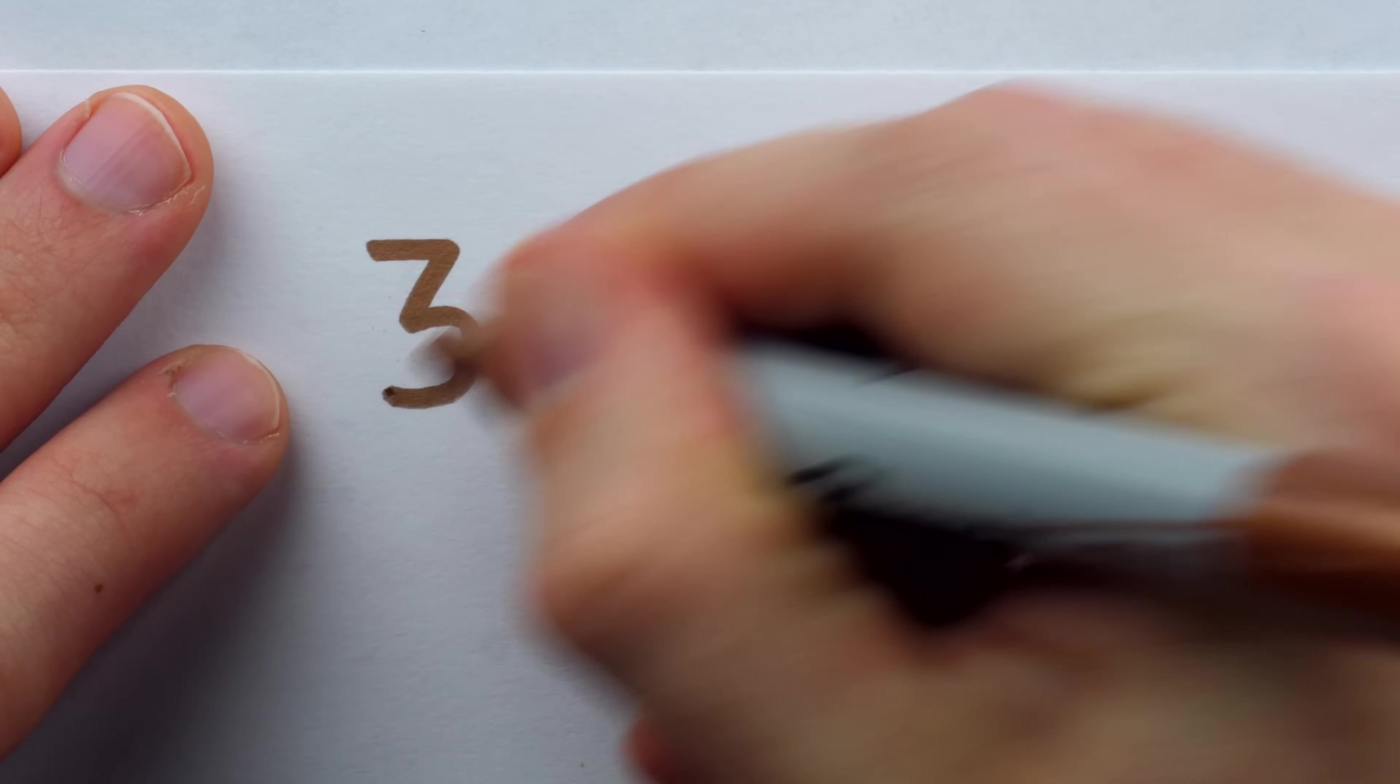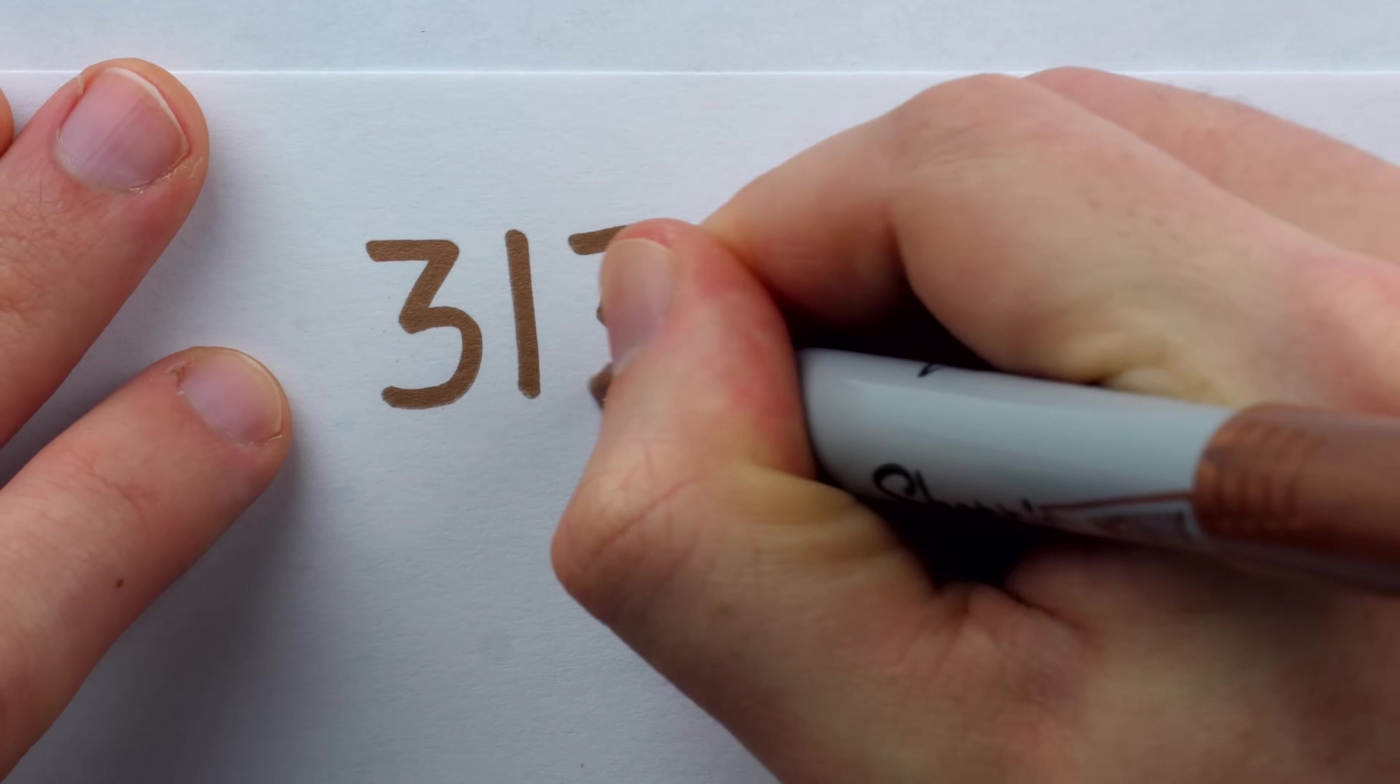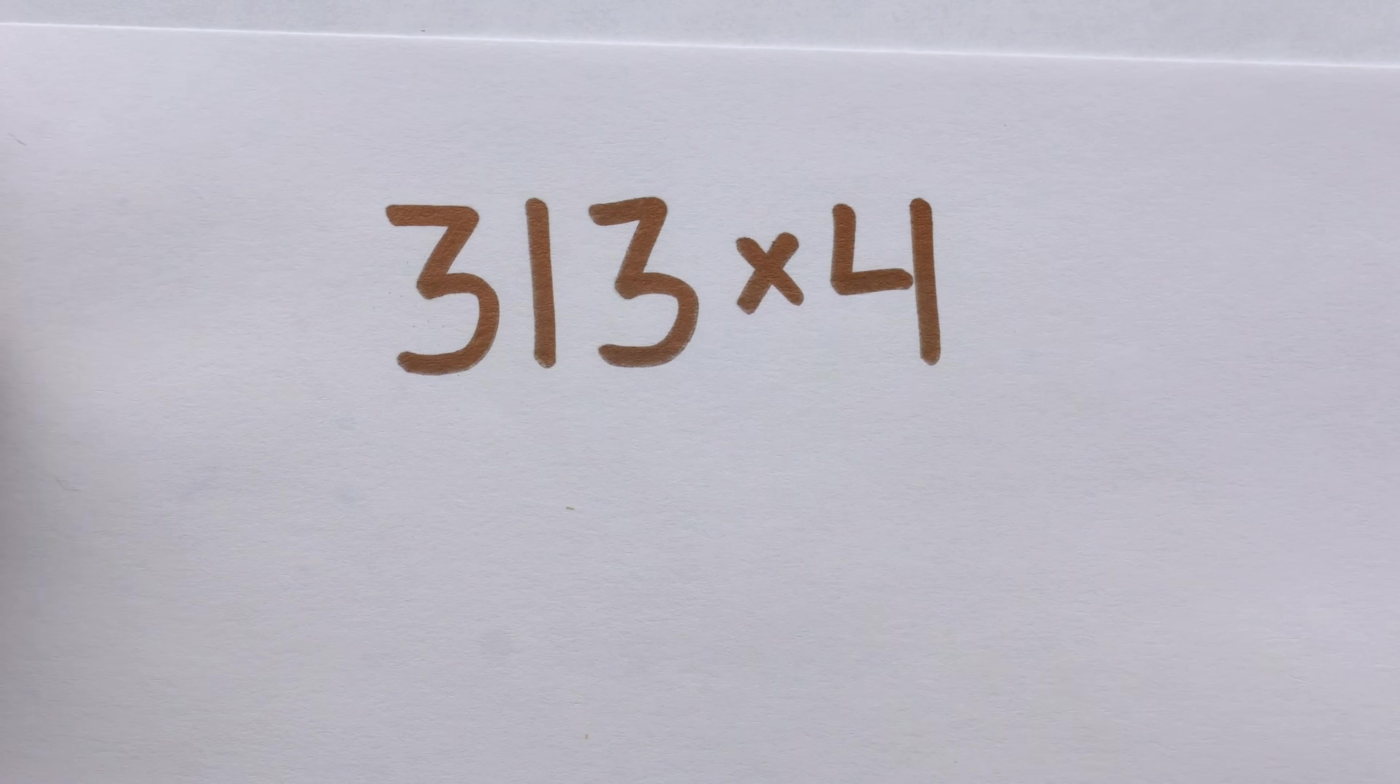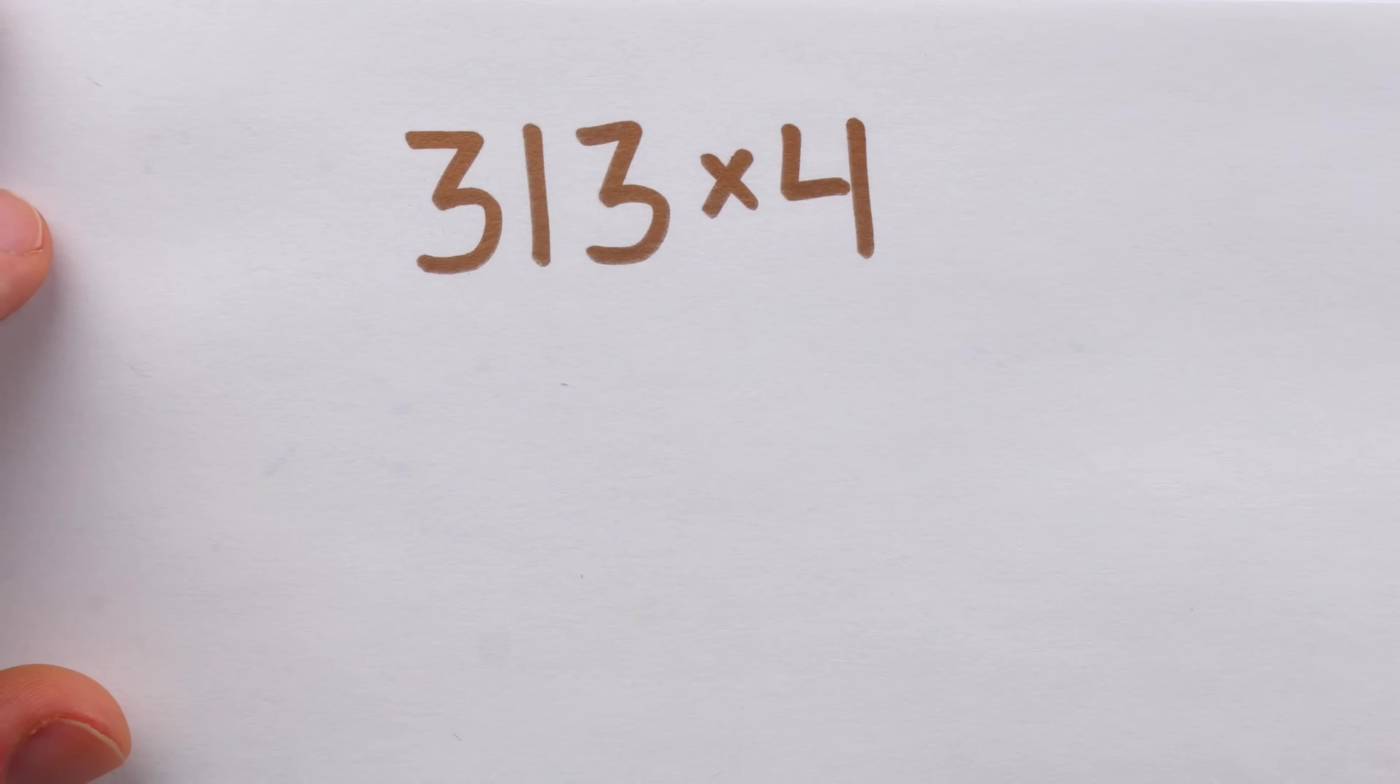But we could just change the problem by a single digit instead of 312, perhaps 313 times 4, and suddenly this carrying becomes a bit more of an issue.